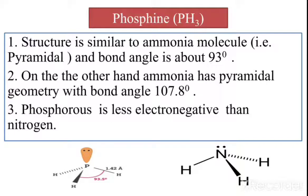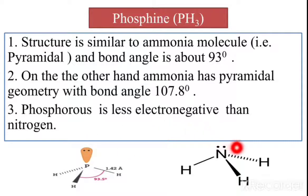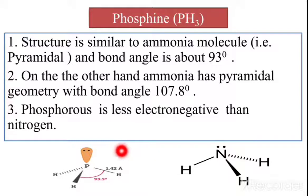Phosphine, that means PH3. Now, this phosphine has a structure similar to the ammonia molecule. This is the structure of the ammonia molecule. This phosphine has a structure similar to the ammonia molecule — that is pyramidal. The ammonia molecule has a pyramidal shape, and here the bond angle is about 93 degrees.